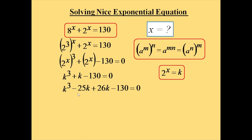We rewrite k as -25k + 26k, which still equals k. So splitting, from k³ - 25k we take k as common, giving k(k² - 25). From 26k - 130 we take 26 as common, giving 26(k - 5), since 26 × 5 = 130.